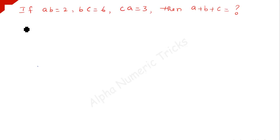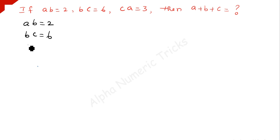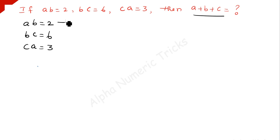Now we are going to solve this nice olympiad problem. If AB is equal to 2, BC is equal to 6, and CA is equal to 3, we have to find out the value of A plus B plus C. Let's number these equations 1, 2, and 3.